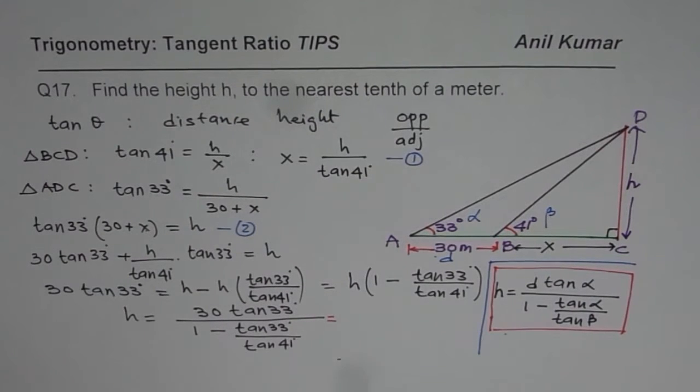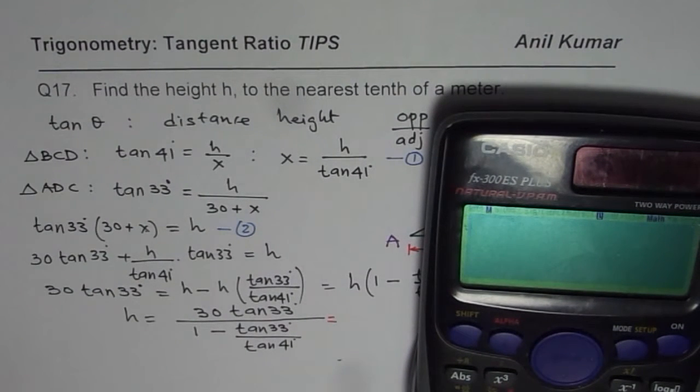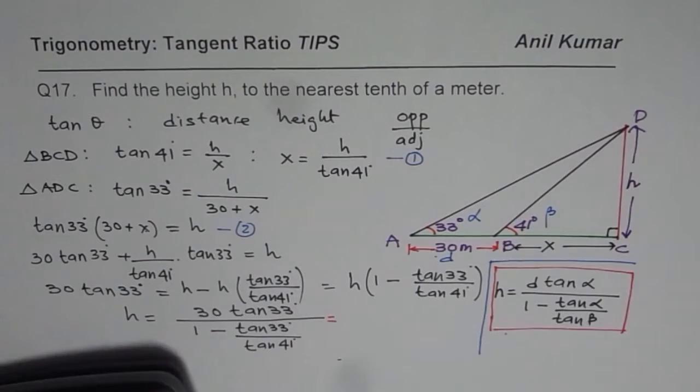Now you can use a calculator and find this answer. Let us do it in small steps. I am calculating the denominator first: 1 minus (tan 33°)/(tan 41°). That is the denominator: 0.25294.